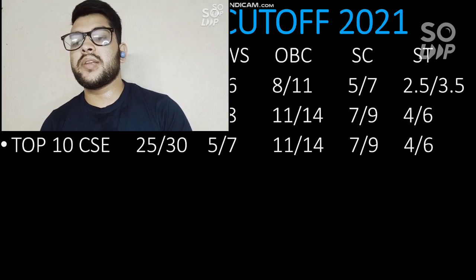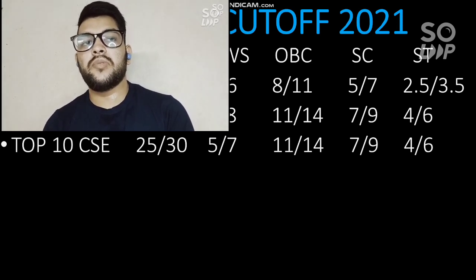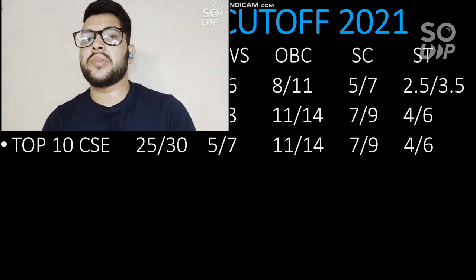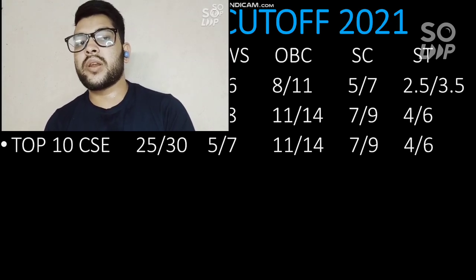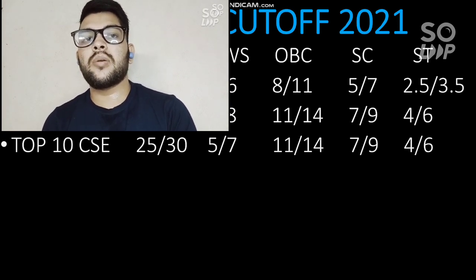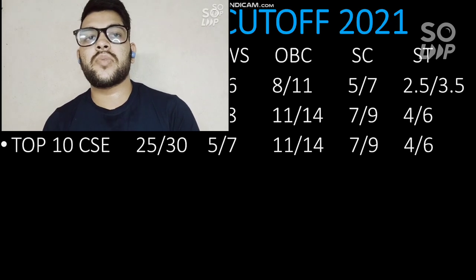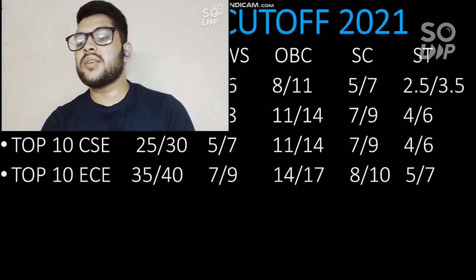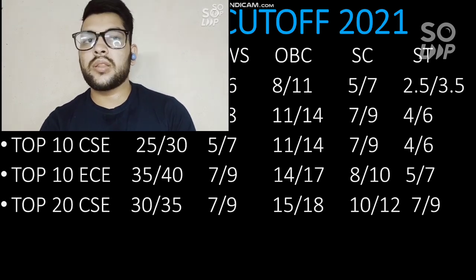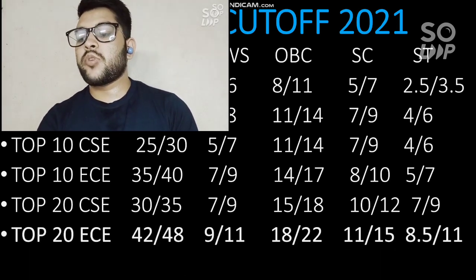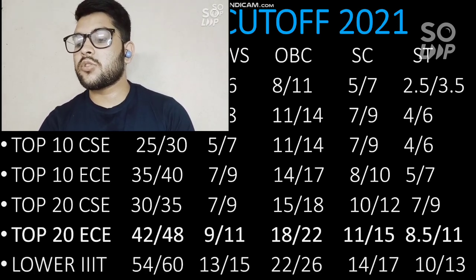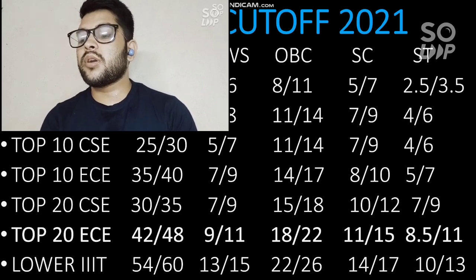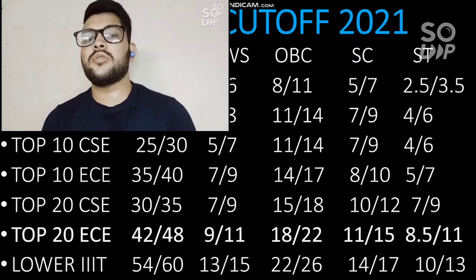For top 10 IIIT CSE: 25,000 and 30,000 for General students. For top 10 IIIT EC: 35,000 and 40,000 for General male and female. For top 20 IIIT CSE: 30,000 and 35,000. Top 20 IIIT EC: 45,000 and 48,000. For lower IIIT, you can get CSE or EC branch at 54,000 to 60,000. You can check other categories sidewise by pausing the video.